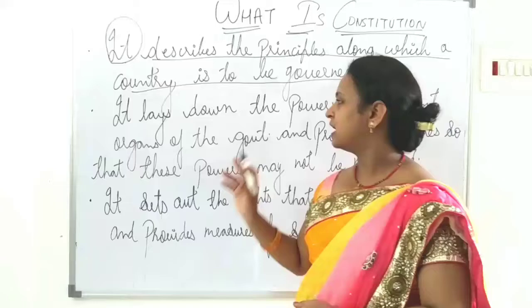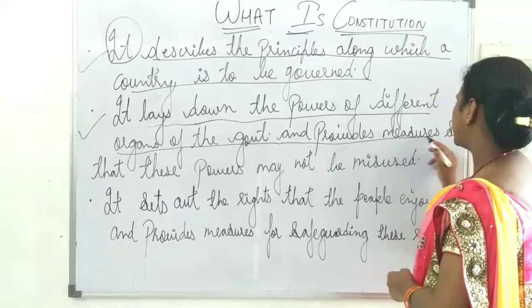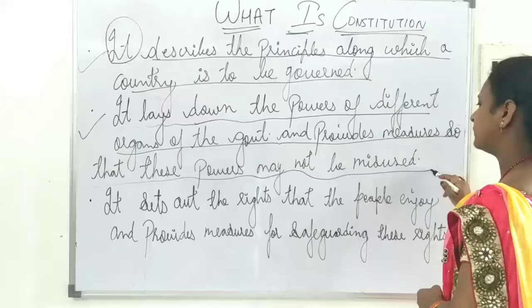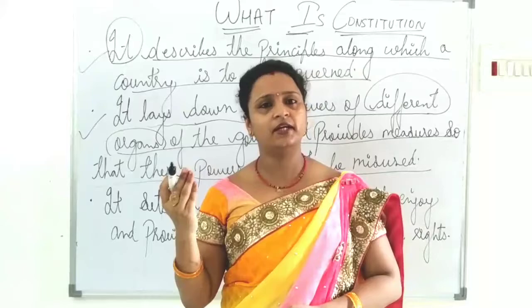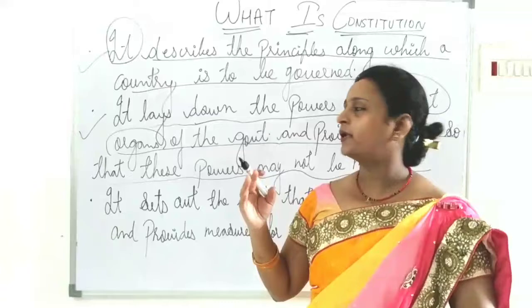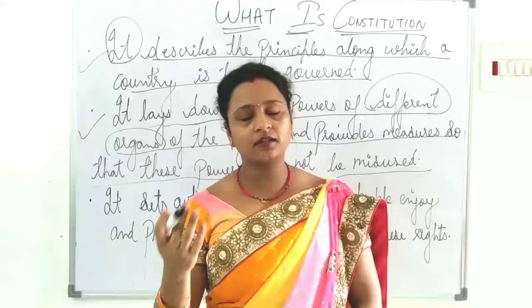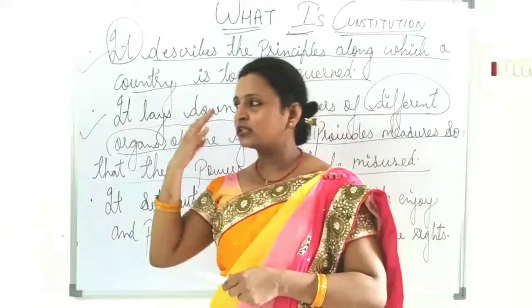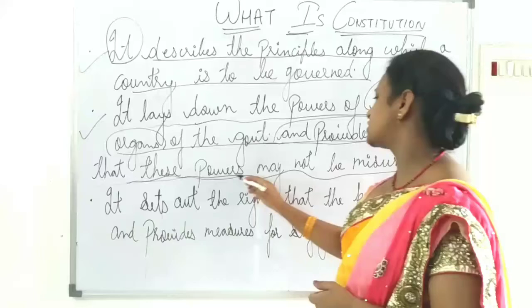Now let's see the second point. The Constitution lays down the parts of different organs of the government and provides measures so that these parts may not be misused. Different organs of the government include police, legislative bodies, and executive bodies. Some parts execute the law, some are there for making the law, and some organizations are there for implementing the law.